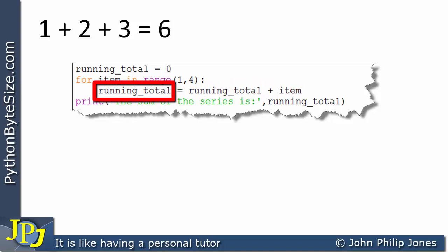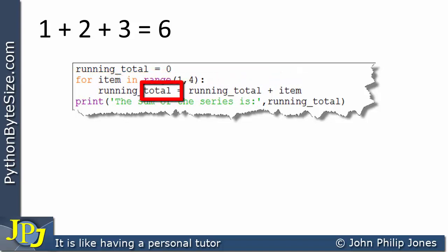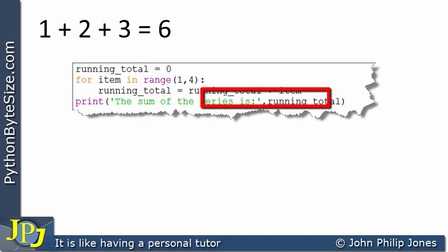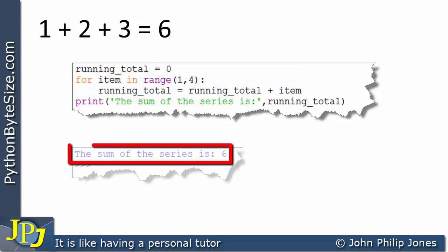The running total now stores the value of 3. We then go into the for loop one more time, and on this occasion the item has picked up this value. The 3 is added to whatever the running total is at the moment, which we know is 3. So we get the value of 6, which is assigned to the running total. On this line, we then print this literal string, the sum of the series is, and we print out the running total. The output we would expect is the sum of the series is 6.